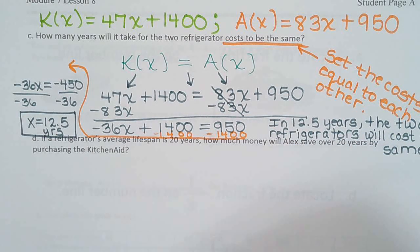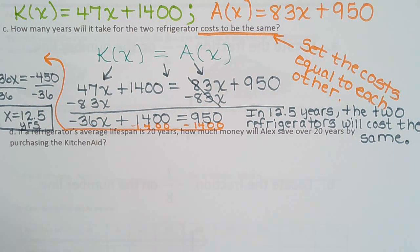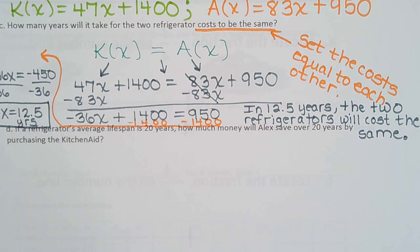Based on what we found algebraically. If a refrigerator's average lifespan is 20 years, how much money will Alex save over 20 years by purchasing the KitchenAid?